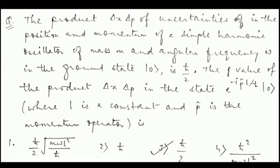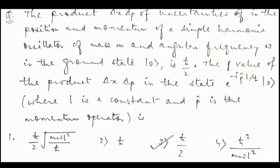To solve this question there exists a trick which can be exploited just by looking at the options. If you consider the operator e^(−ipℓ/ℏ) acting on the ground state, and set ℓ=0, this operator becomes the identity operator. That means e^(−ipℓ/ℏ)|0⟩ gives |0⟩ itself when ℓ=0, and therefore Δx·Δp for this state should equal Δx·Δp in the ground state.